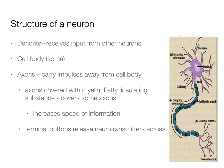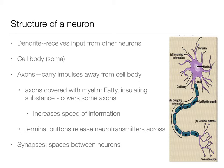At the end of the axon we have terminal buttons, which release neurotransmitter chemicals across the synapse into the dendrites of another neuron. That's where we're going to have the incoming information. So the direction of information goes from dendrite to cell body — there we either fire or we won't. If the neuron fires, it'll go down the axon into the terminal buttons, and that information will cross the synapse, hopefully into another neuron. Synapses are the spaces between neurons.